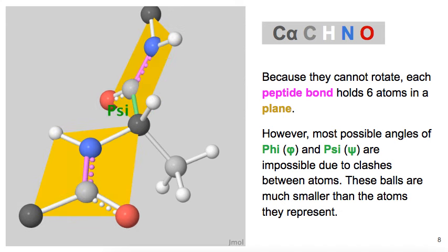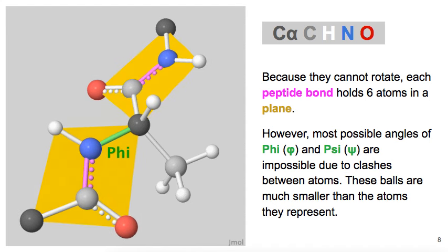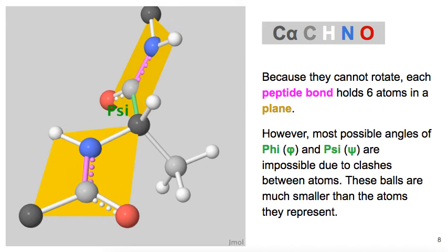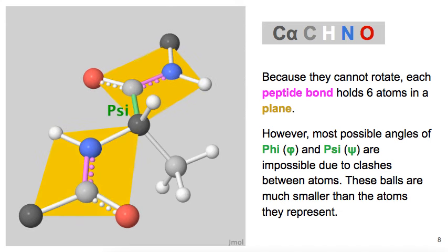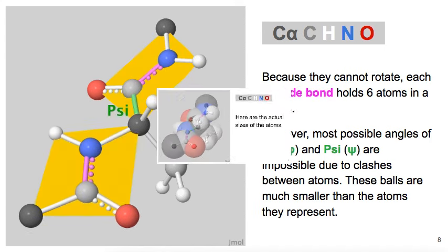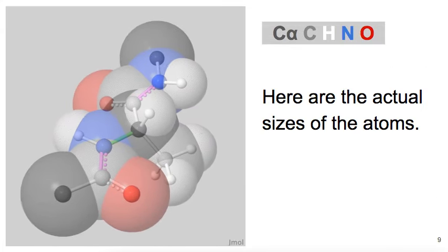In actuality, most phi or psi angles are impossible due to clashes between atoms. Remember that the atoms in this ball and stick model are much smaller than the true atom sizes. Here are the actual sizes of the atoms in our model. These are the so-called van der Waals radii.